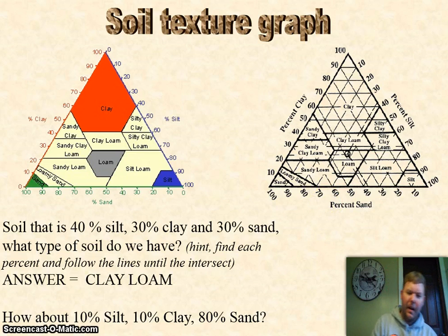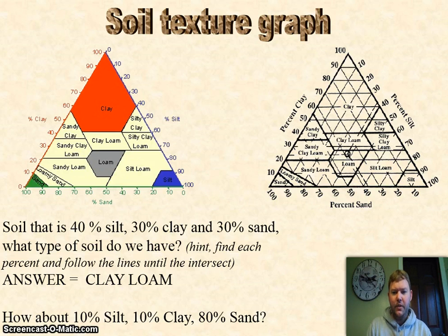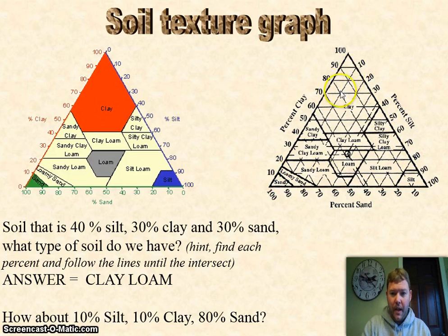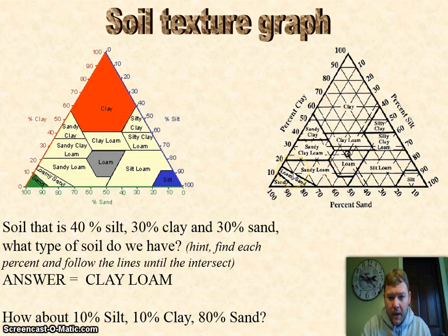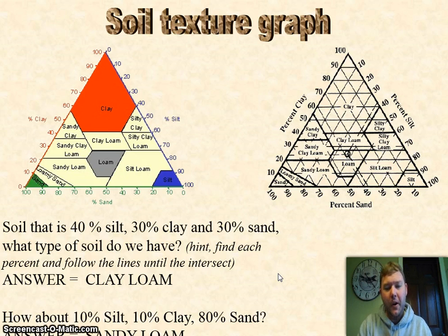Now you try it: ten percent silt, ten percent clay, eighty percent sand. Here's ten percent silt, you follow that down to ten percent clay which is clear down at the bottom, and then eighty percent sand is right back here. So we're right in sandy loam, and that's what it is. Now you know how to read a soil texture graph.